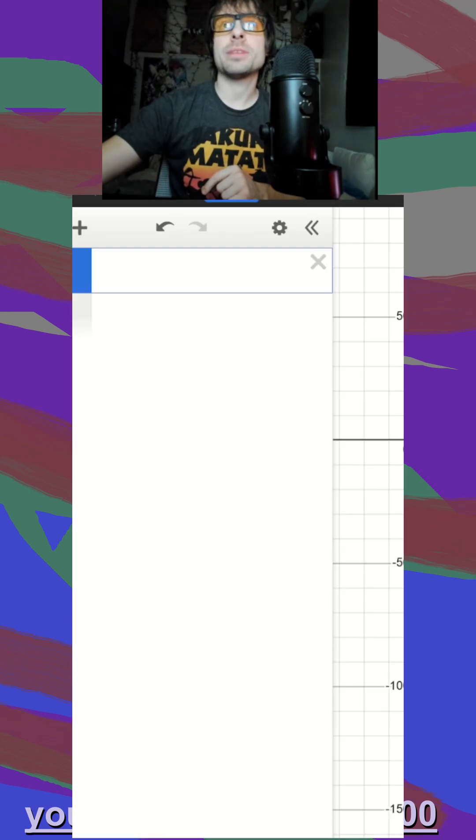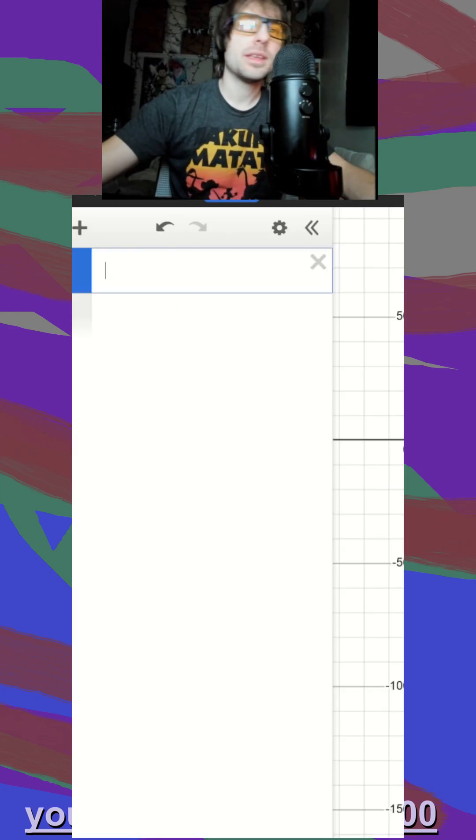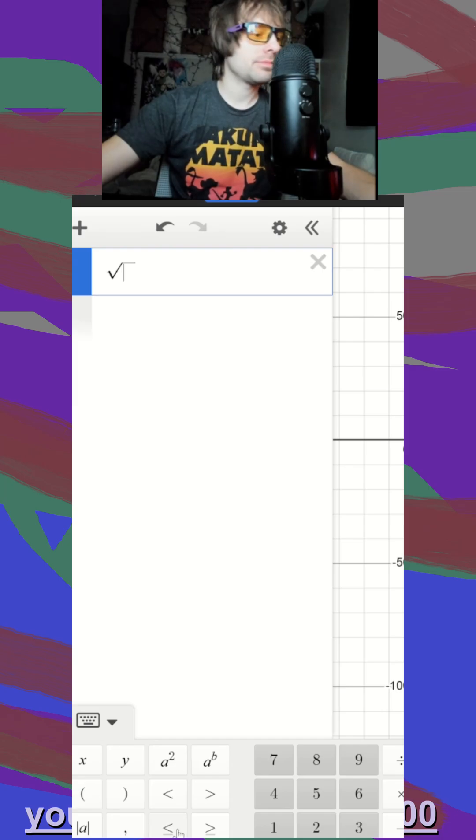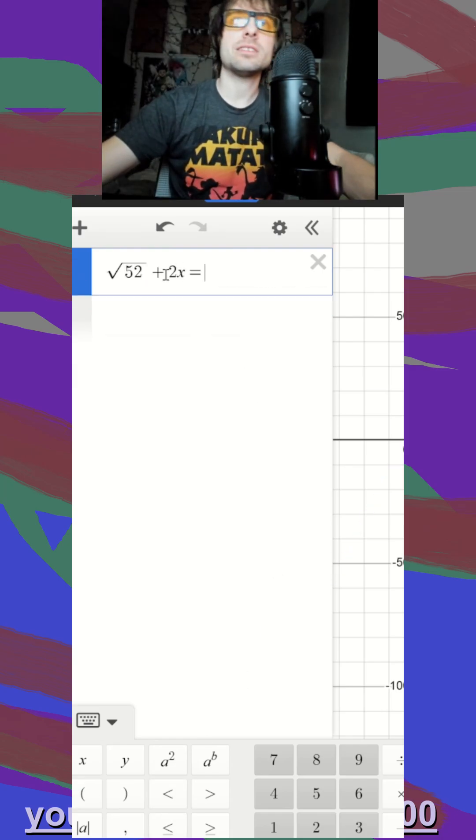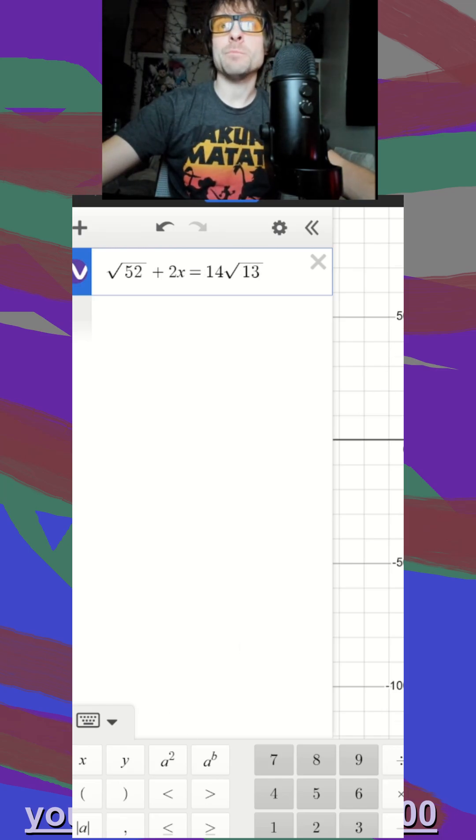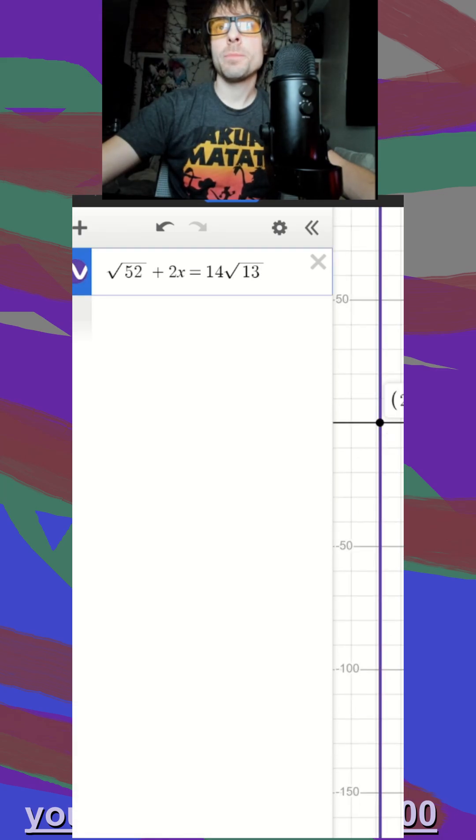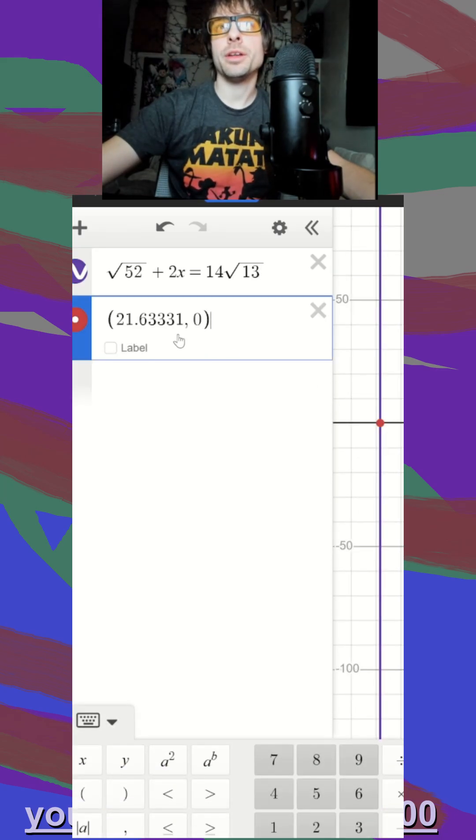And you know straight where I'm typing that equation. I jump in here, and I go √52 + 2x is equal to 14√13. And immediately I can zoom out to see if there's extra solutions. There's almost always just going to be one here. I get something like 21.63.